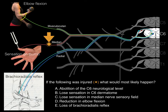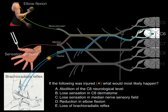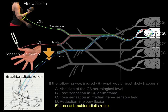If only the median nerve was injured, you would lose sensation only in the median nerve sensory field for the thumb. The musculocutaneous nerve is unaffected so elbow flexion is preserved, and the brachioradialis reflex is okay because the radial nerve is not affected. If the radial nerve alone was injured, the result would be loss of the brachioradialis reflex only, since the musculocutaneous and median nerves are unaffected.